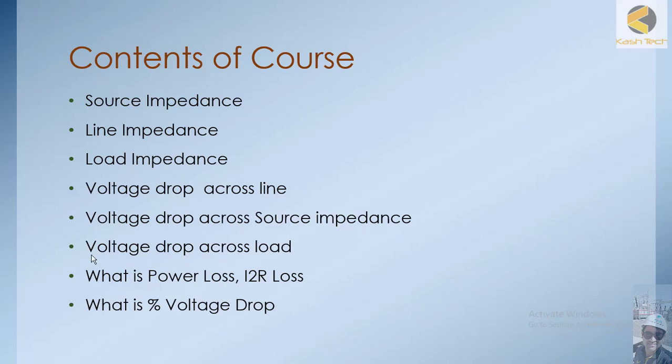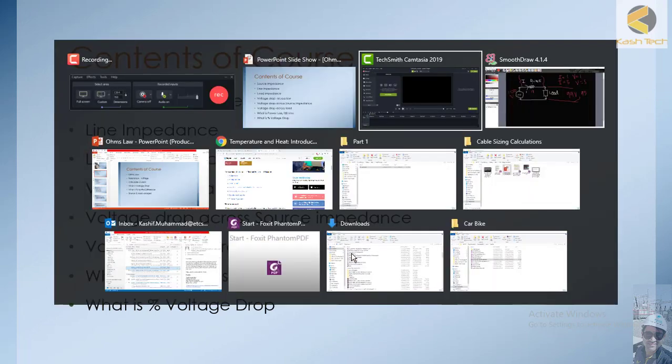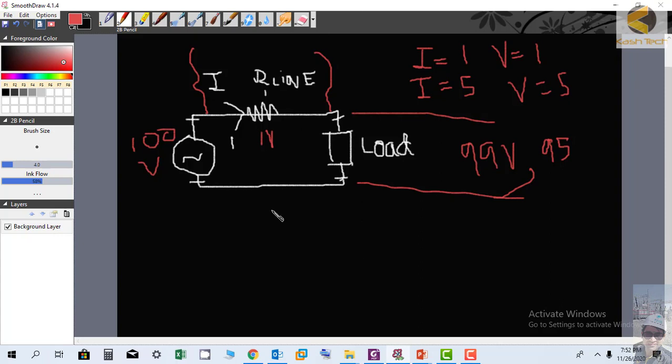Hey guys, now we will move to our next topic, which is basically power losses. Let's see - whenever current flows through a conductor, there is a property of the conductor called resistance. When current passes through the resistance, there will be voltage drop and losses.